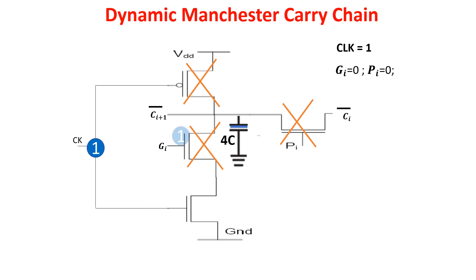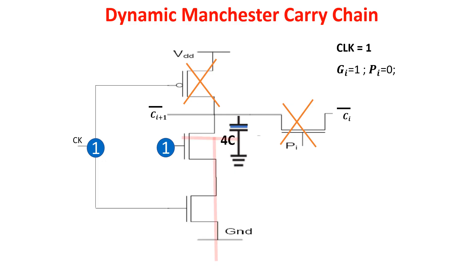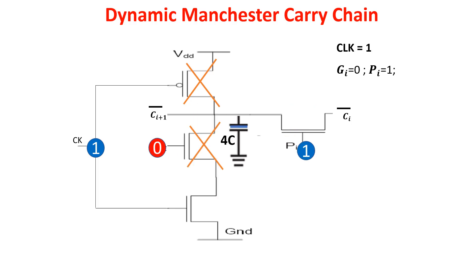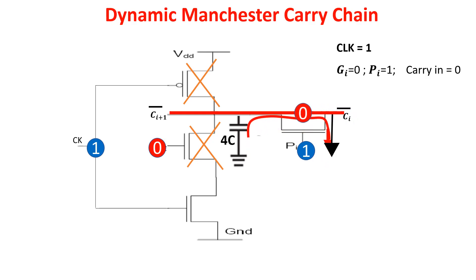When the clock is 1, we process the propagation and generation bits. In kill mode with both GI and PI at zero, the capacitor remains charged and the output remains at one, meaning zero as carry out, as it should be in kill mode. In generation mode with GI and PI at zero, the capacitor discharges through the NMOS, so output is at zero and carry out is at one, as it should be. In propagation mode with PI at one, the pass transistor is on. If the previous bit is zero, the capacitor discharges through the pass transistor and zero propagates. If the previous bit is one, the capacitor remains charged. So if PI is one, the carry passes unchanged, as it should be in propagation mode.